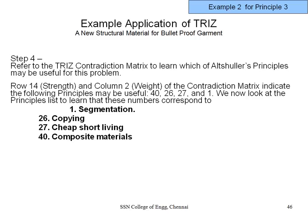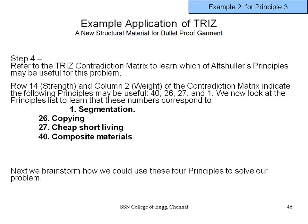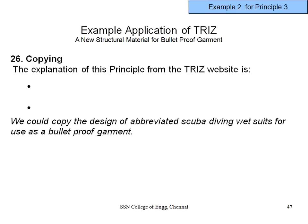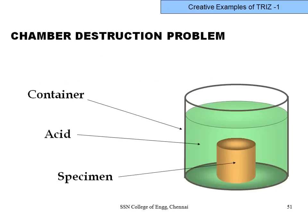To summarize: the contradiction matrix works by defining what you want to improve — go to the row; what you don't want to disturb — go to the column; look at the intersection and get four prescribed ideas; apply them. That is the straightforward method of TRIZ. There are only 39 engineering contradictions, and 40 methods to solve them.